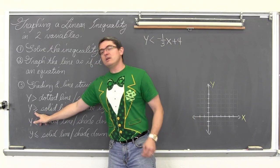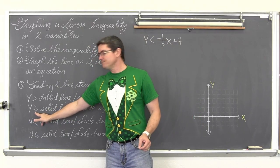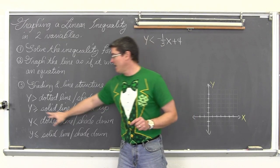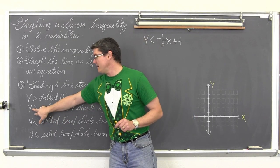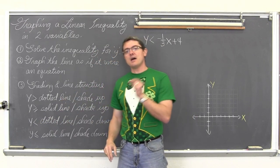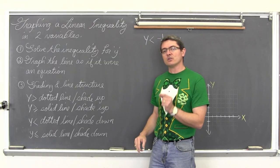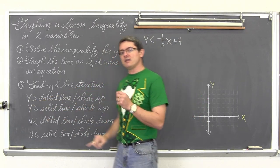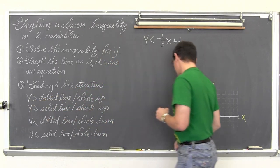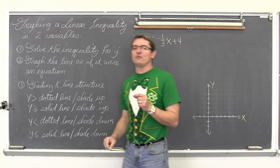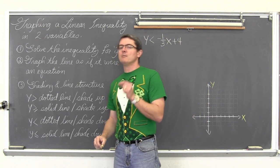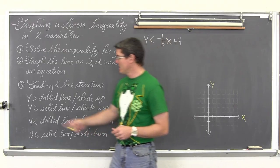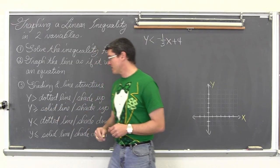If it is y is greater than or equal to, then it is going to be a solid line because of that equal sign. So the line is actually a solution to the inequality. Whereas if it is just greater than, the line defines where the solutions begin, but it itself is not part of the solution. And you shade up again because your y values are getting larger.